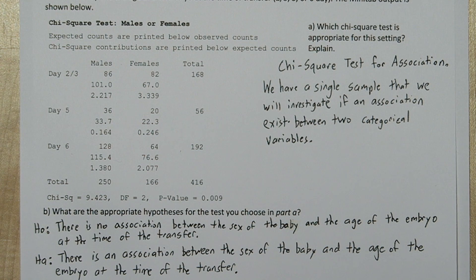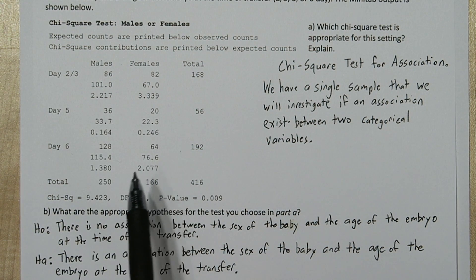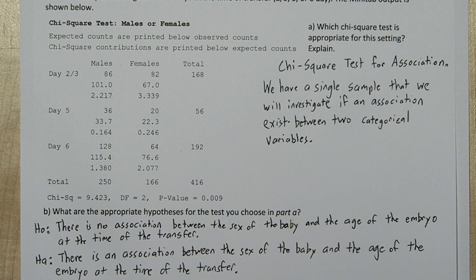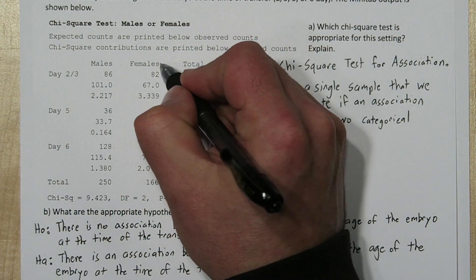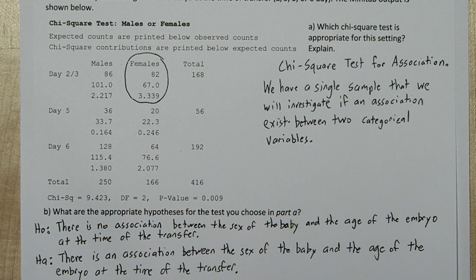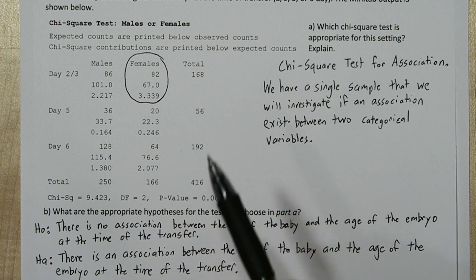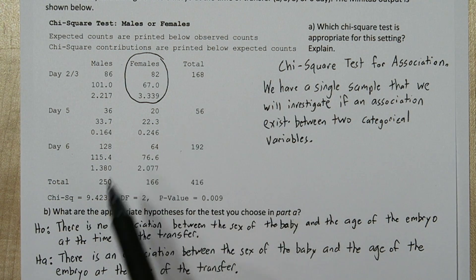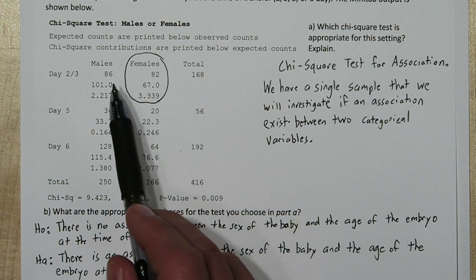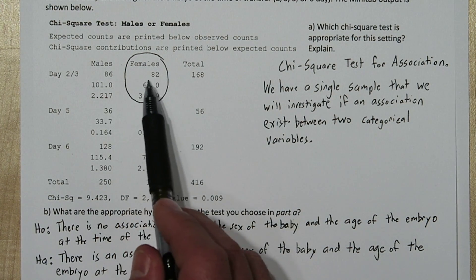Now for Part D, let's look at the computer output one more time. Remember, the third row in each of the cells is the chi-square contribution. So our greatest contribution is right here, for females who were transferred as a 2-3 day old embryo. The reason this cell has the most contribution to the chi-square test statistic is because overall males were favored in all the ages, and for days 2-3, the males and females were almost the same.